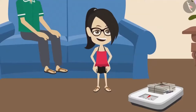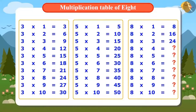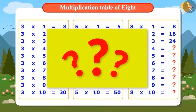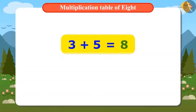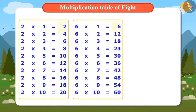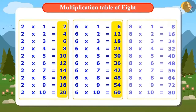Vandana has understood how to find the multiplication table of 8. Can you find the table of 8 from any multiplication table besides these? Just like adding 3 and 5 gave us the number 8, you have to find two small numbers which add up to 8. For example, adding 3 and 5 gives 8. We can also do this by adding 2 and 6, which will also give us 8. This means you can find the table of 8 by adding the numbers of multiplication tables of 2 and 6.